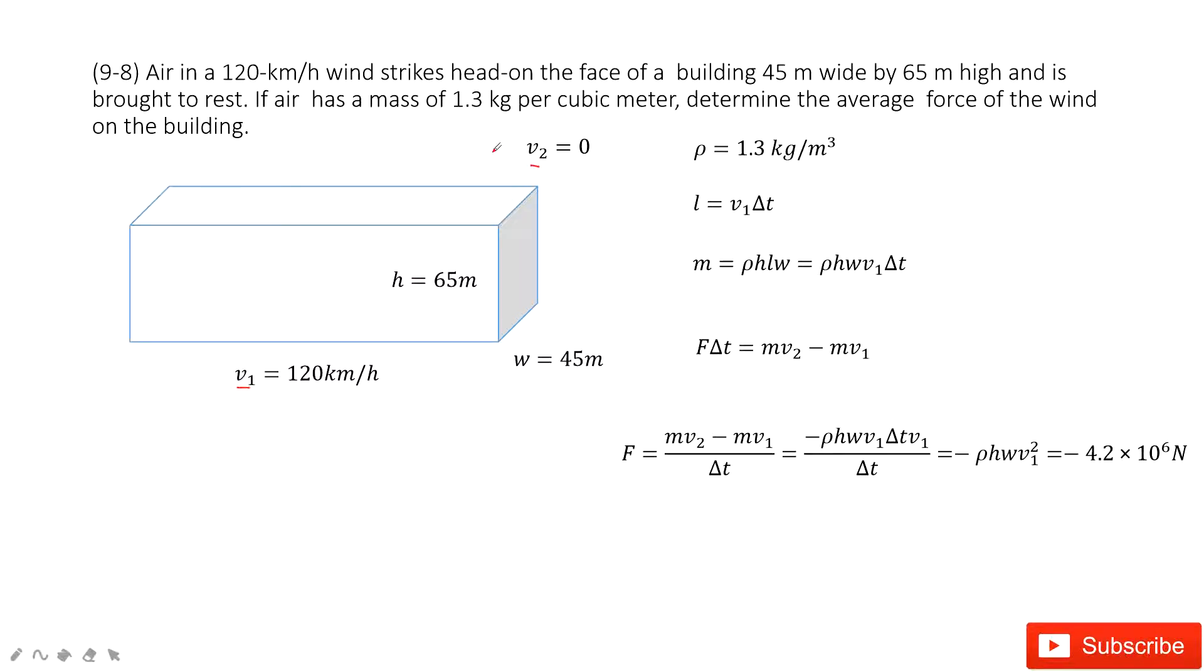And then it also tells you the density of the air. The mass is 1.3 kg per cubic meter. This is density. I ask you to determine the average force for this air. So how can you do that?